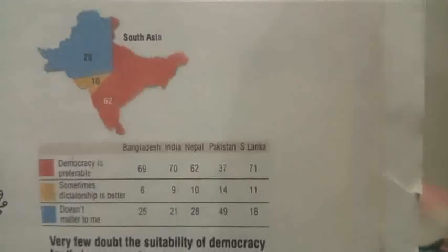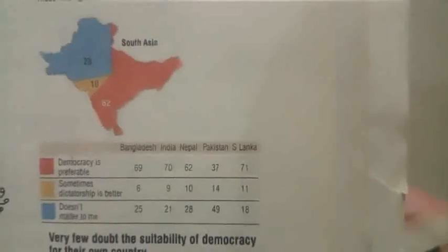We have detailed data regarding this. In the first dataset, we look at five countries of South Asia. In Bangladesh, 69% of people say that democracy is preferable; in India, 70%; in Nepal, 62%; in Pakistan, 37%; and in Sri Lanka, 71%. When we take the average of this data — adding 69, 70, 62, 37 and 71 and dividing by 5 — the figure we get is around 62%.